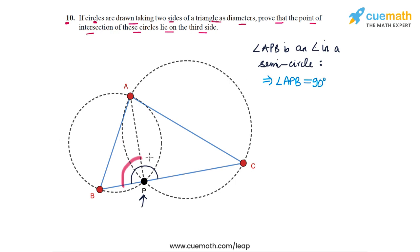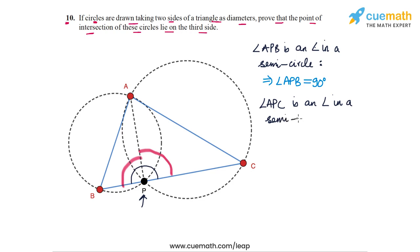Similarly, angle APC is also an angle in a semicircle because AC is a diameter. Therefore, angle APC is also equal to 90 degrees. — (2)